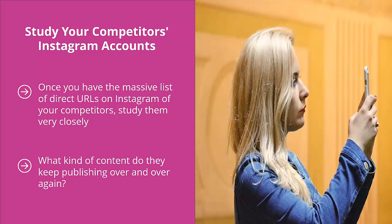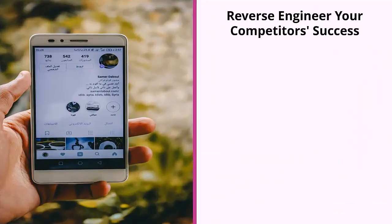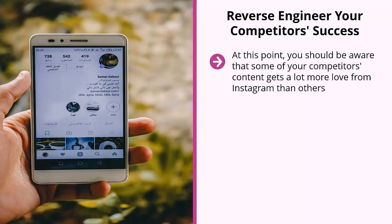You can tell that competitors publish content using the same theme or topics consistently. Take note of these patterns. Most importantly, pay attention to the hashtags they're using. At this point you should be aware that some of your competitors' content gets a lot more love from Instagram than others — this should be your top priority.